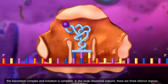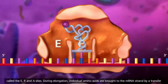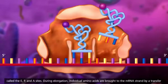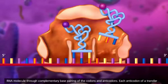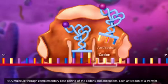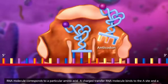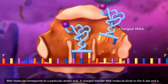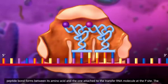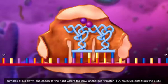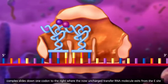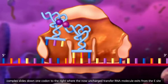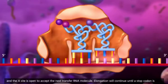In the large ribosomal subunit, there are three distinct regions called the E, P, and A sites. During elongation, individual amino acids are brought to the messenger RNA strand by a transfer RNA molecule through complementary base pairing of the codons and anticodons. Each anticodon of a transfer RNA molecule corresponds to a particular amino acid. A charged transfer RNA molecule binds to the A site and a peptide bond forms between its amino acid and the one attached to the transfer RNA molecule at the P site. The complex slides down one codon to the right where the now uncharged transfer RNA molecule exits from the E site, and the A site is open to accept the next transfer RNA molecule.